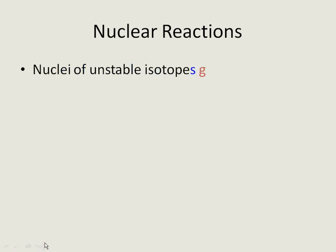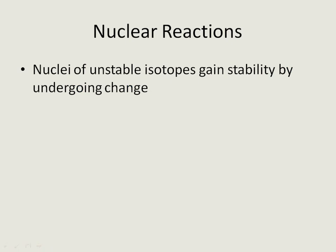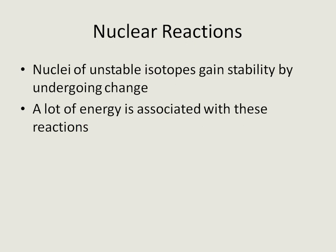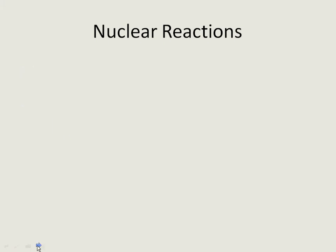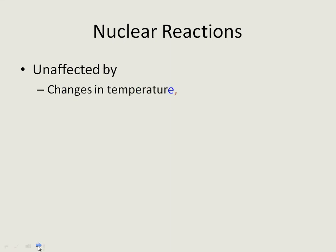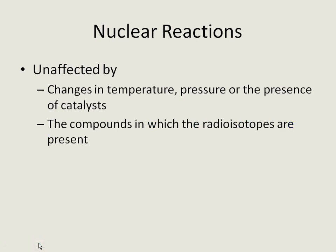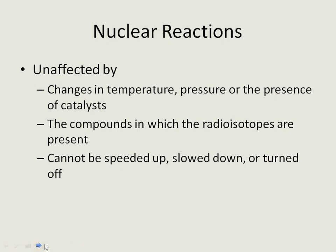Nuclear reactions: the nuclei of unstable isotopes gain stability by undergoing change. As you probably know, there's a lot of energy associated with these reactions — we're talking about changes in the nucleus itself, looking at the protons and neutrons. Nuclear reactions are unaffected by changes in temperature, pressure, or the presence of catalysts. As you'll soon learn in inorganic chemistry, all three of those changes will affect the rate of a reaction, but not in a nuclear reaction. Nuclear reactions are also unaffected by the compounds in which the radioisotopes are present — it doesn't care what other atoms are around it. And nuclear reactions cannot be speeded up, slowed down, or turned off; they're going to continue to proceed.